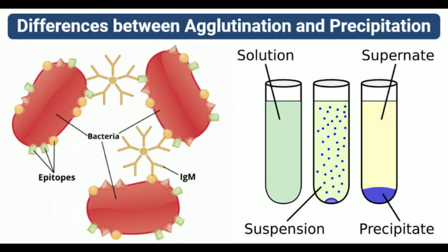In flocculation, the precipitate floats instead of sedimenting. Precipitation reactions are commonly performed on semi-solid surfaces like agar media or non-gel support media like cellulose. The precipitate formed in the reaction remains suspended until enough force of gravity can settle the precipitate towards the bottom.